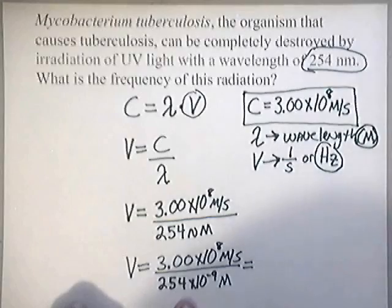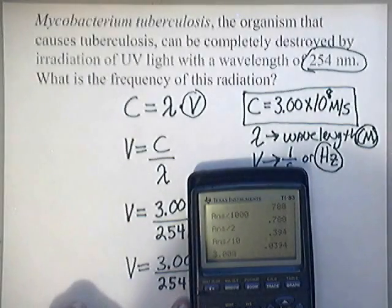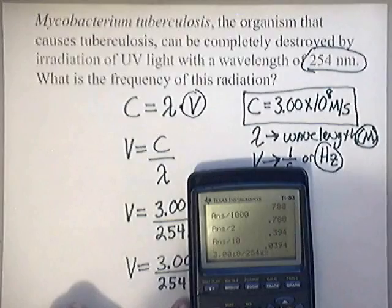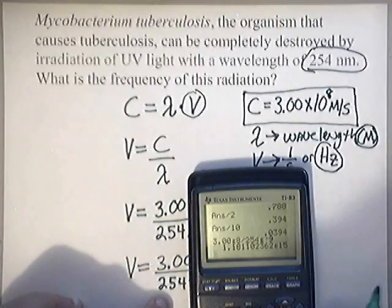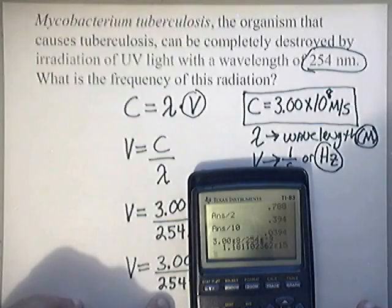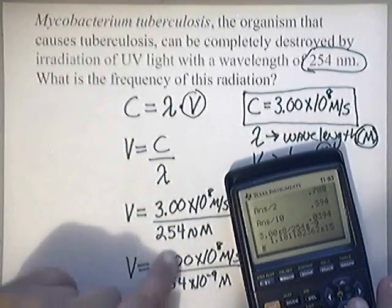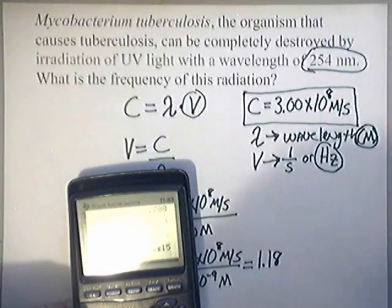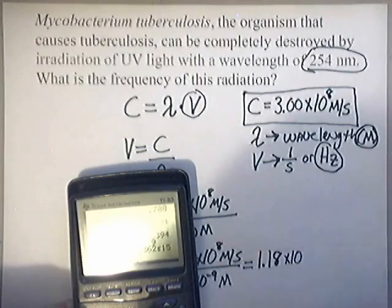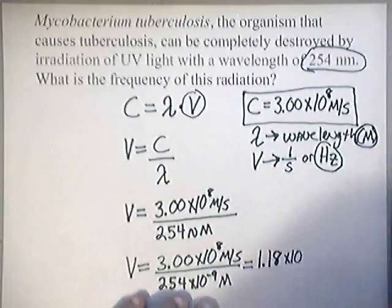Now, when you do that and you punch that into your calculator, be careful. Turn your calculator on. It's 3.00 times 10, hit second comma, then type 8 divided by 254 times 10 to the negative 9. Now, when you do that, you end up getting this big old long number. 1.1181102362E15. Well, I'm not going to write all that. I need 3 sig figs because I got 3 sig figs here and 3 sig figs here. So the answer that I'm going to write is 1.18 times 10 to the 15th.